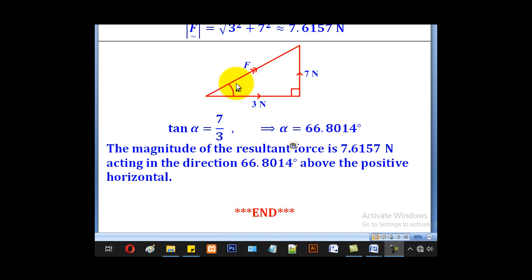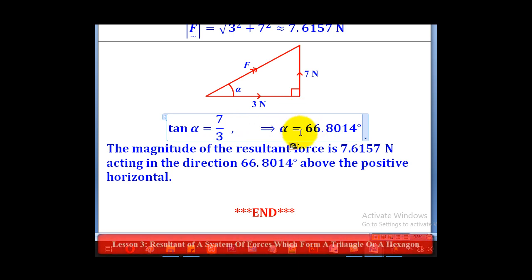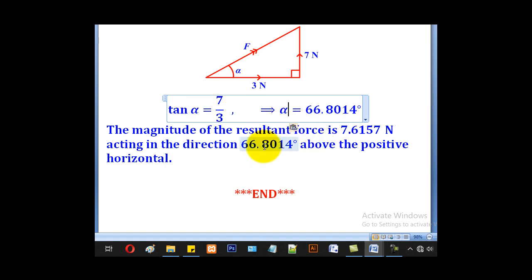The direction of the resultant will be found using opposite over adjacent, so tan α = 7/3, giving α as 66.8014 degrees. We conclude that the magnitude of the resultant force is 7.6157 newtons, acting in the direction 66.8014 degrees above the positive horizontal.